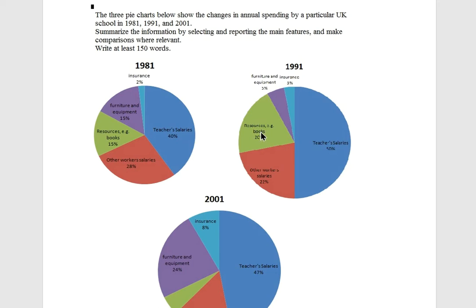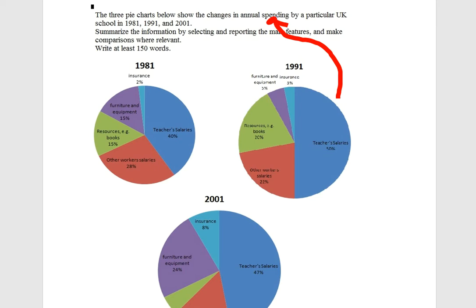So don't panic. Just follow the steps in my blog post at EnglishTestHelp.online. Firstly, think about the years — there are 20 years from 1981 to 2001. Then count the colours and count the categories. There are five categories of spending. Focus on this word: annual spending. Next, you want to think about the biggest and the smallest. Look for the most obvious, the most significant features.